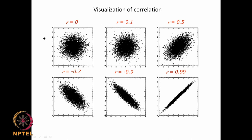As the correlation improves — for example, as X increases, Y also increases — the correlation coefficient tends towards 1. Analogously, you can have a value of negative 1, meaning as X increases, Y decreases. These types of figures indicate that the correlation between X and Y is extremely good, whereas a scattered plot indicates that the correlation between X and Y is extremely poor.